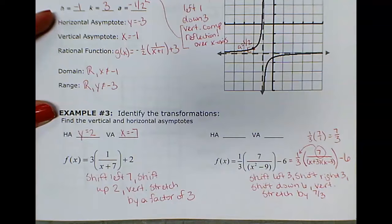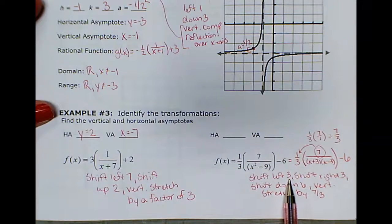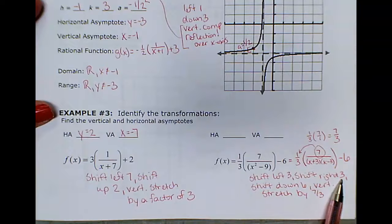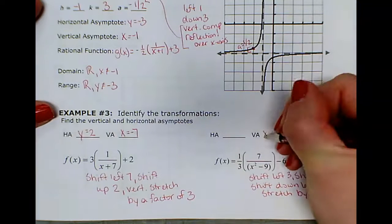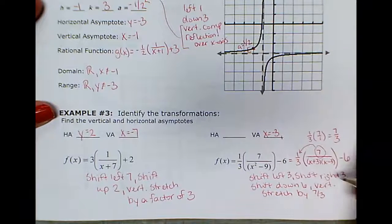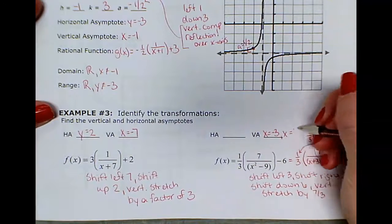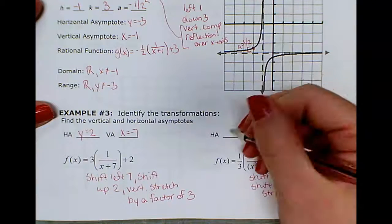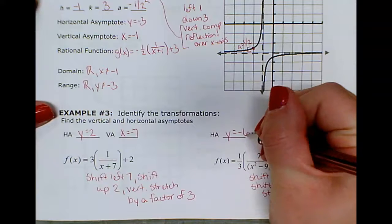For the asymptotes: shifting left 3 and right 3 means there are two vertical asymptotes — one at x = −3 and one at x = 3. The horizontal asymptote shifts down 6, so y = −6.